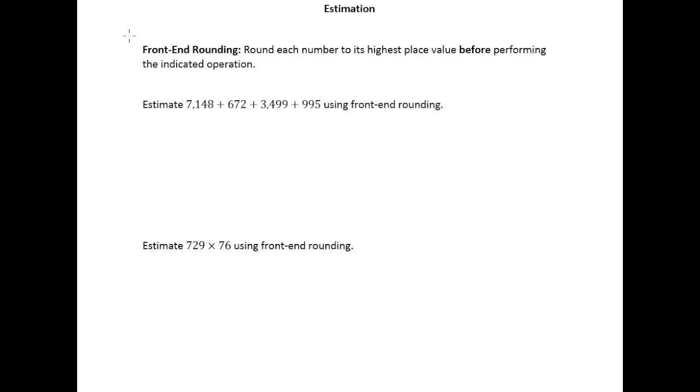So this type of estimation is going to ask us to do our rounding before the operation, which makes sense because the point of estimating, at least in part, is to quickly get a general idea for what the answer should be. So of course we want to make the number simpler before doing whatever operation we're asked to do.